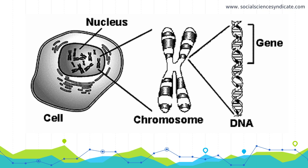DNA is coiled up into chromosomes, and DNA itself stands for deoxyribonucleic acid — essentially a combination of different base pairs and chemicals that make up who you are. Smaller sections of these are called genes, which are specific codes for different things inside your body. The entire set of instructions for making up who you are is called your genome.